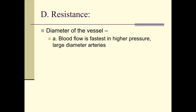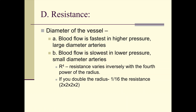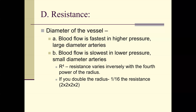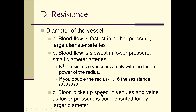Blood flow is fastest and highest pressure in large-diameter vessels like the aorta. Blood flow is slowest and low pressure in small-diameter vessels. Resistance varies inversely with the fourth power of the radius — if you double the radius, you get one-sixteenth of the resistance, so the flow rate increases. Blood picks up speed in venules and veins as low pressure is compensated by larger diameter.